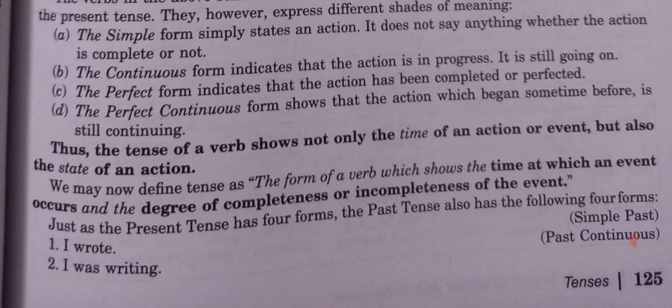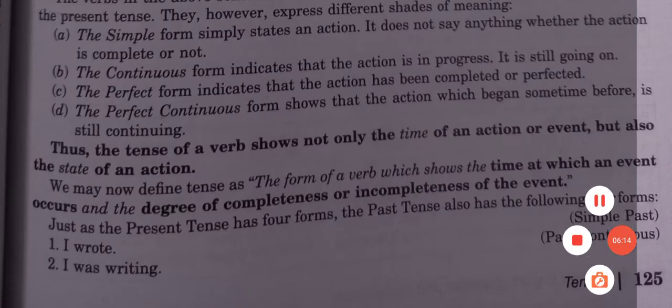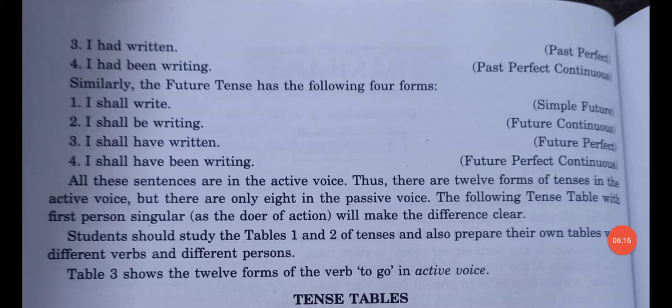We may now define tense as the form of a verb which shows the time at which an event occurs and the degree of completeness or incompleteness of the action. Just as the present tense has four forms, the past tense also has four forms: I wrote, I was writing, I had written (past perfect), I had been writing (past perfect continuous).